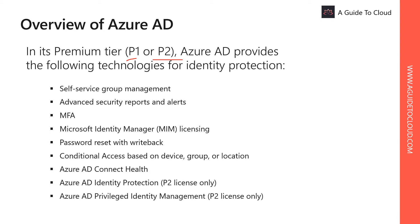The following features are part of Azure AD P1. The first one is self-service group management, which simplifies the administration of groups where users are given the rights to create and manage groups themselves. Secondly, advanced security reports and alerts — you can monitor and protect access to your cloud applications by viewing detailed logs that show advanced anomalies and inconsistent access pattern reports.